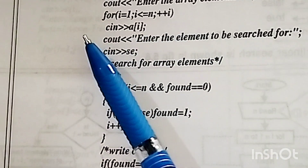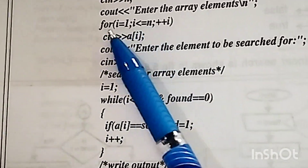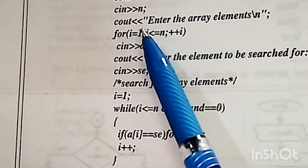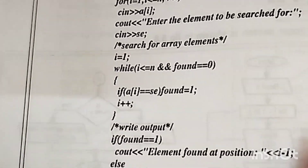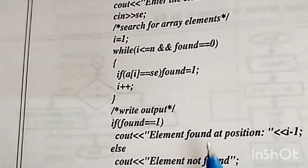So first we start searching. If the element is found, found becomes 1 and we print the position. If it is not found, the loop goes back checking positions 2, 3, and so on, and after finishing we print the result.